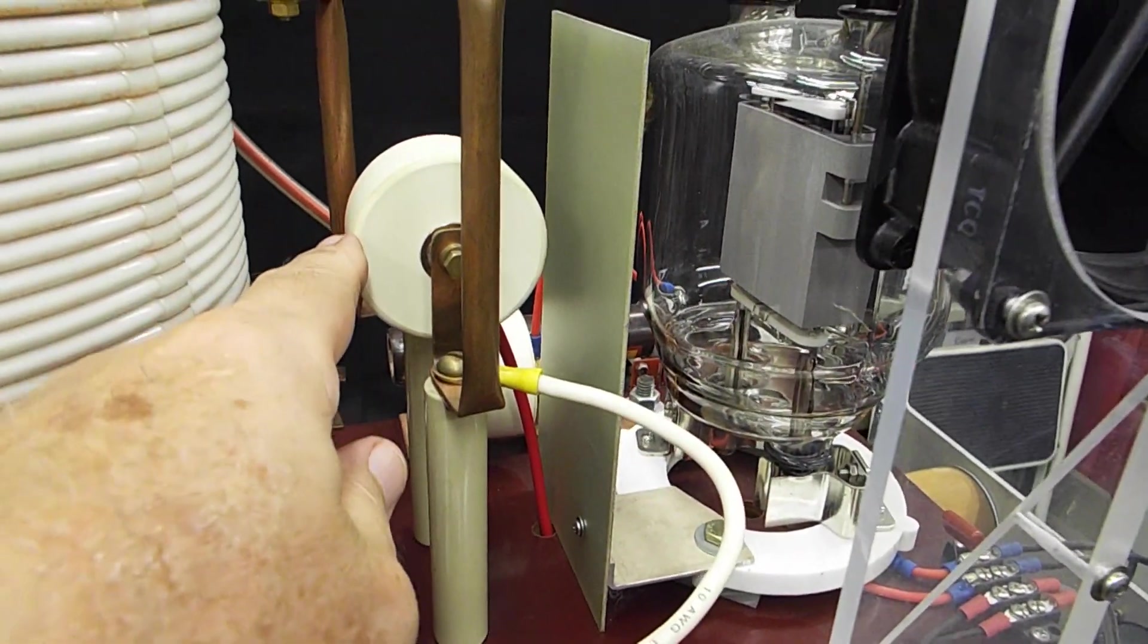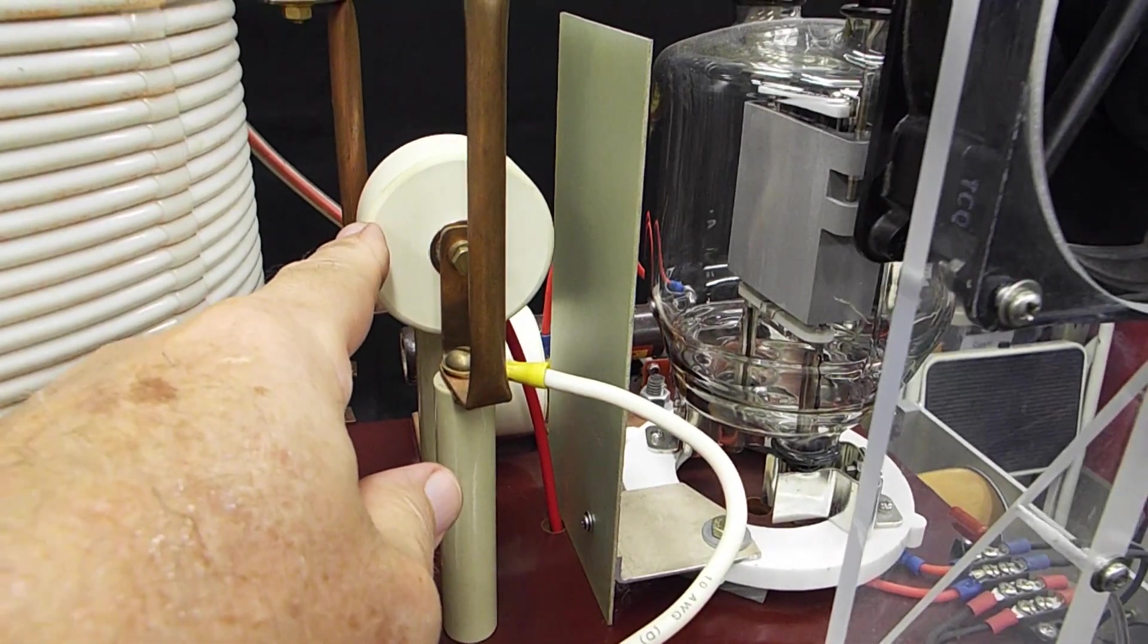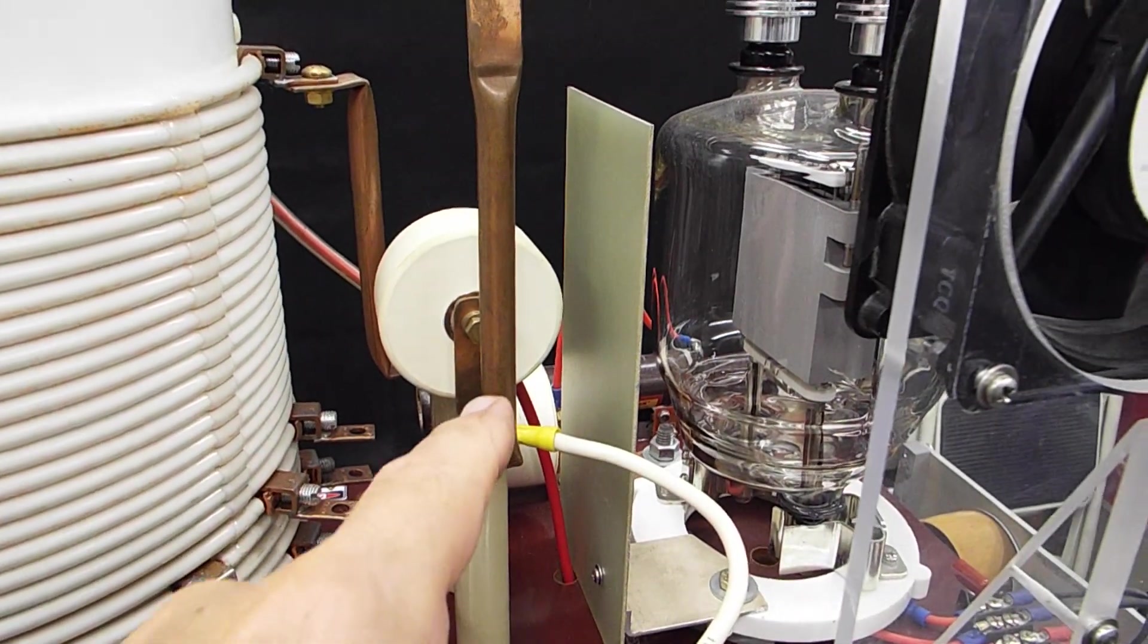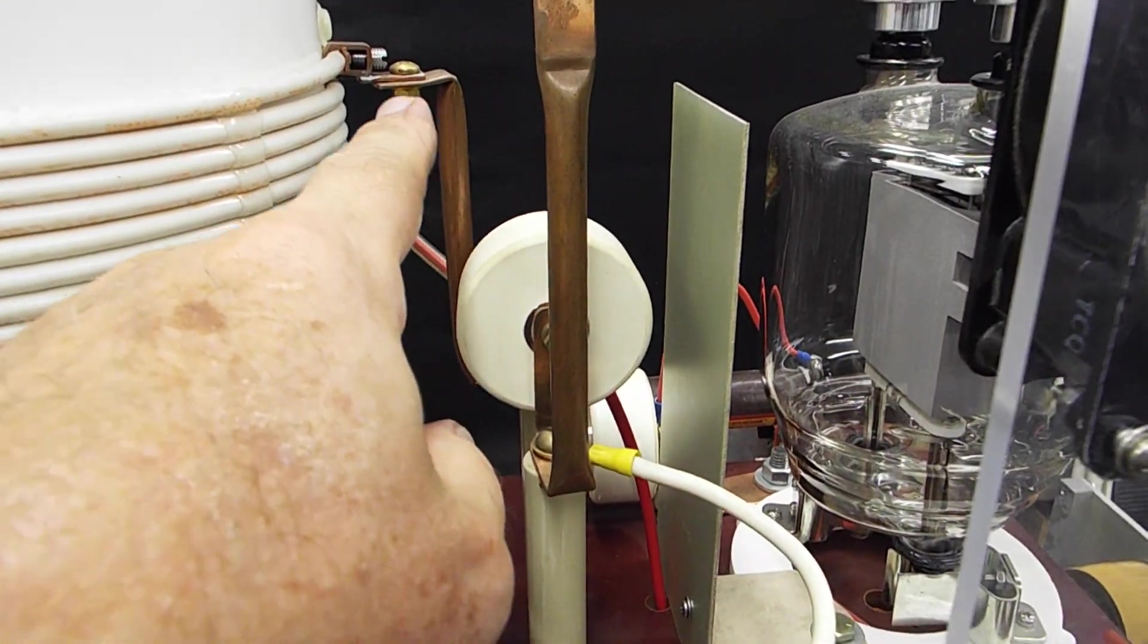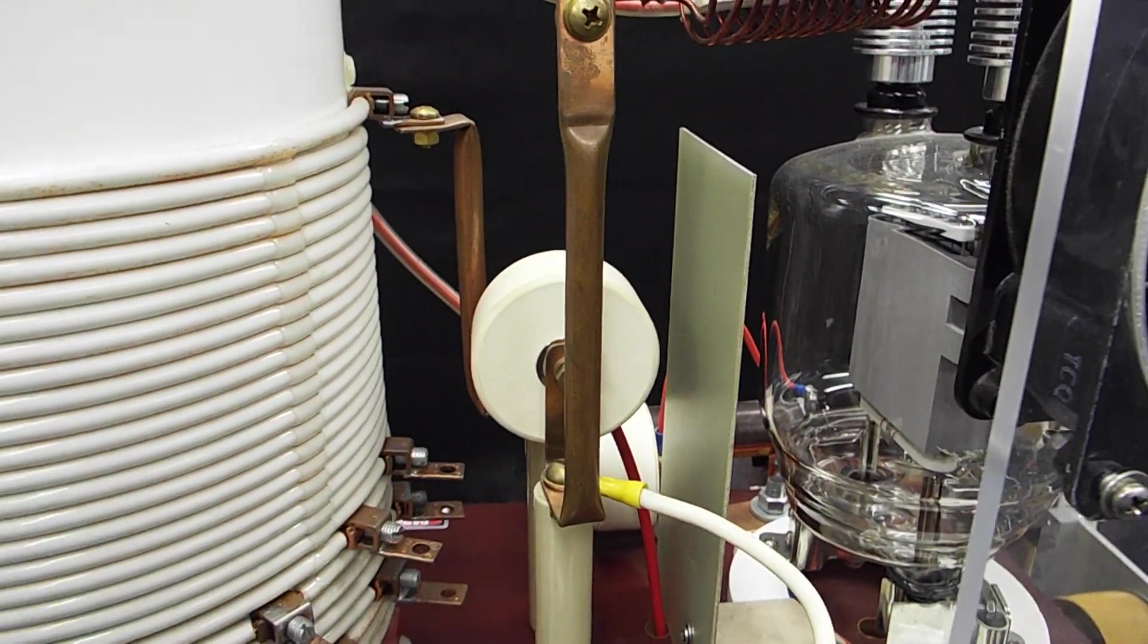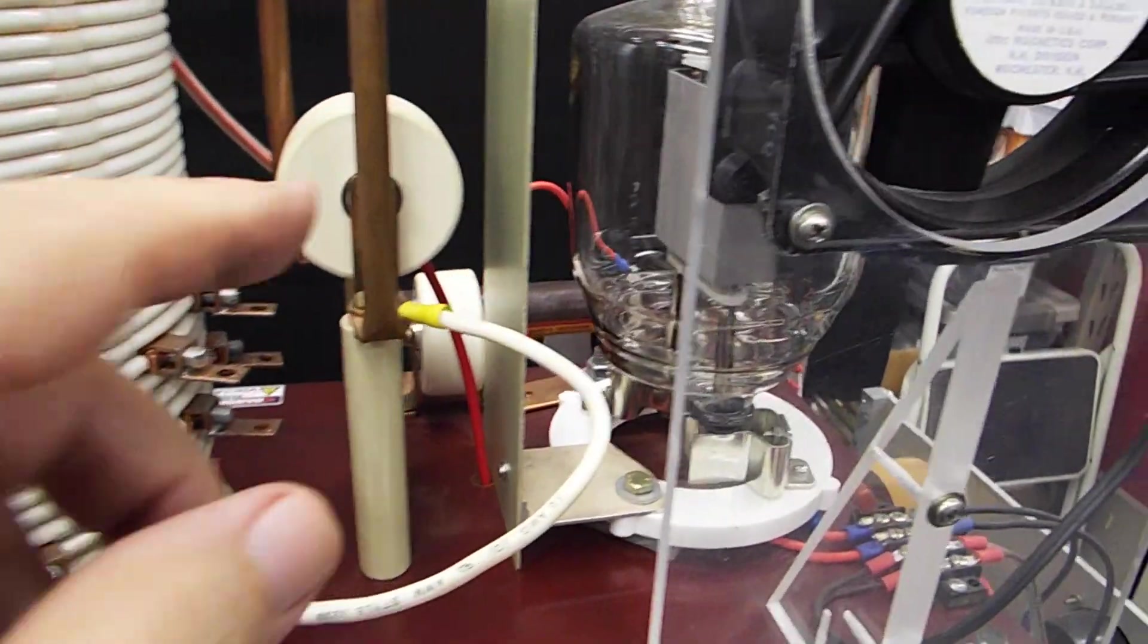Here's the primary circuit doorknob capacitor, and I use copper tubing, which I haven't seen anybody else do for the conductors.